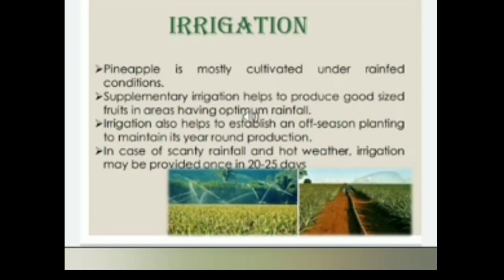Irrigation: Pineapple is mostly cultivated under rain-fed conditions. Supplementary irrigation helps to produce good-sized fruits in areas having optimum rainfall. Irrigation also helps to establish off-season planting to maintain year-round production. In case of scanty rainfall and hot weather, irrigation may be provided once in 20 to 25 days.